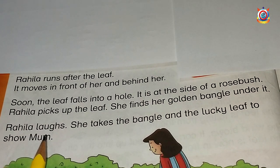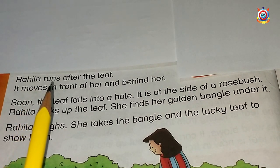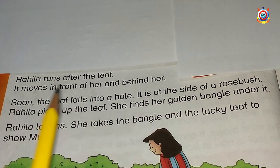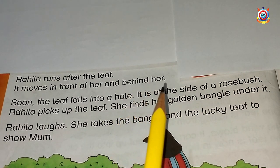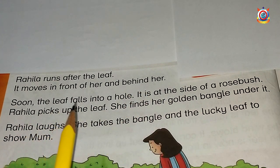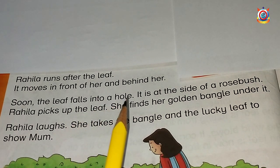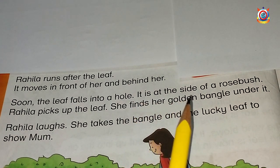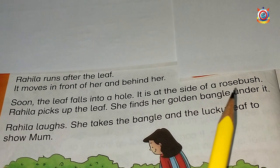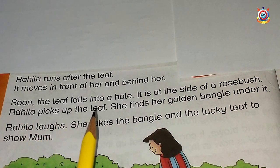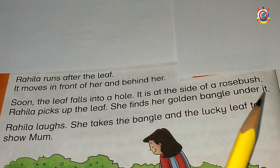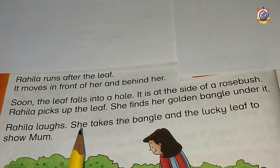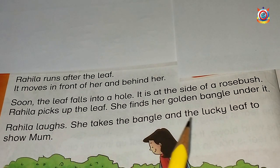Okay students, I am reading again — read with me. Rahila runs after the leaf. It moves in front of her and behind her. Soon the leaf falls into a hole. It is at the side of a rose bush. Rahila picks up the leaf. She finds her golden bangle under it. Rahila laughs. She takes the bangle and the lucky leaf to show mum.